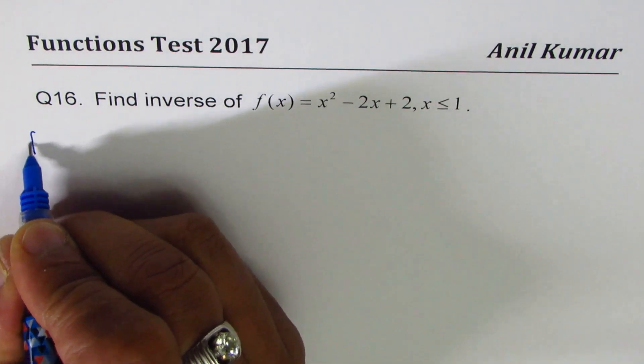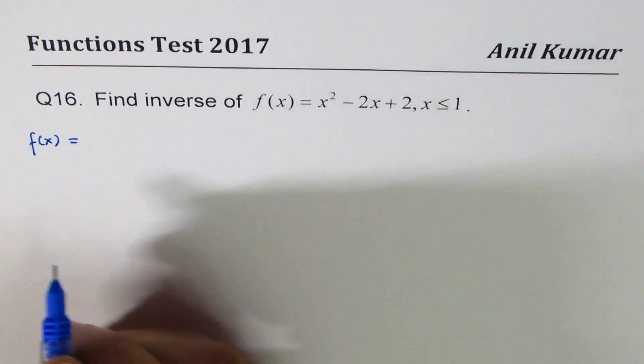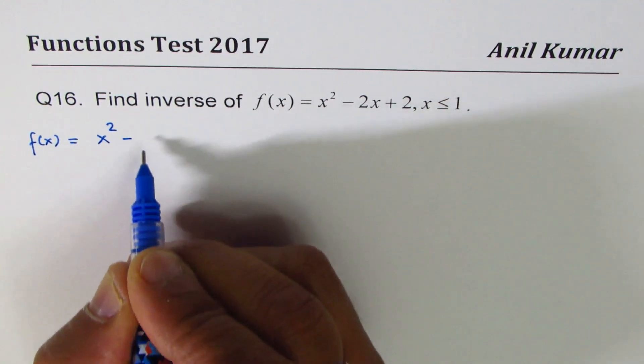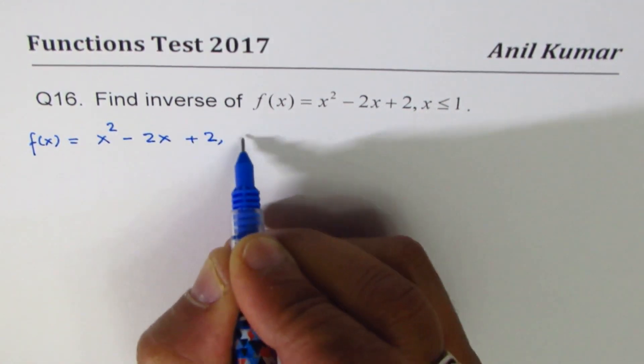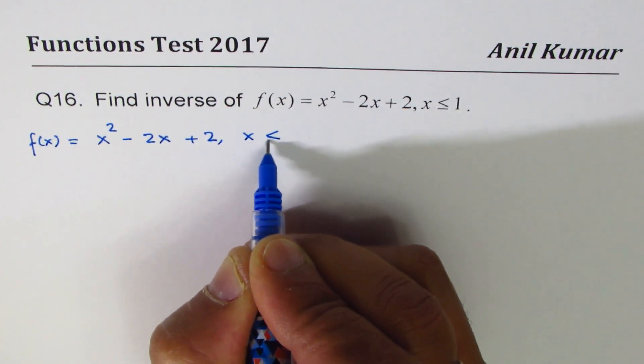We are given f(x) = x² - 2x + 2, where x ≤ 1. This is a quadratic equation in standard form.